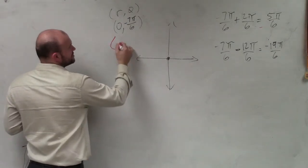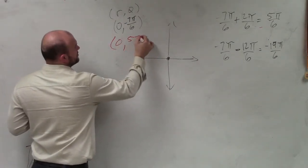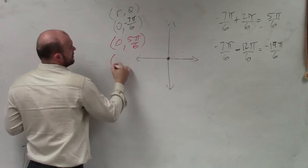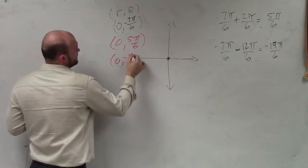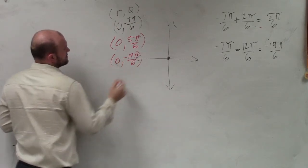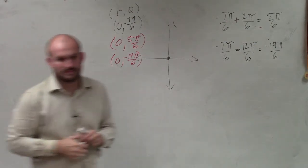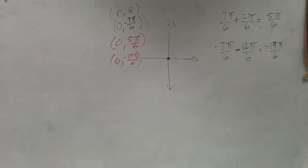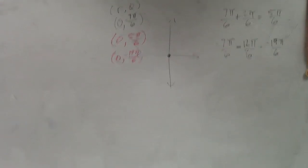But again, if I just want to find two angles that have the same representation, it'd be 5 pi over 6, and 0 equals negative 19 pi over 6. OK? So the radius stays the same, but the angles is what's going to different. And when you're finding